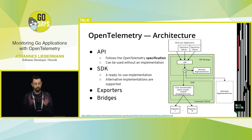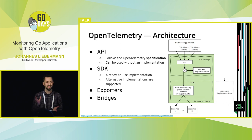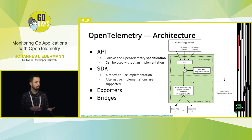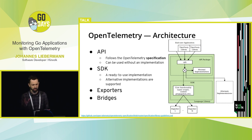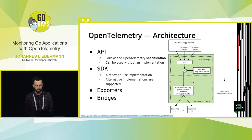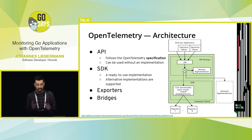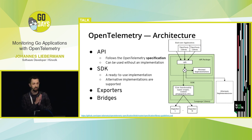We've got an SDK, which is a ready-to-use implementation of the API. It could potentially become the canonical implementation of the project, but you could write your own — there could be alternatives. The SDK takes care of actual span creation, context propagation, sampling, and lots of other stuff. This is where the low-level details are. We have exporters, which are responsible for delivering tracing data to tracing backends. These are vendor-specific — we have a Jaeger exporter, a Datadog exporter, whatever.